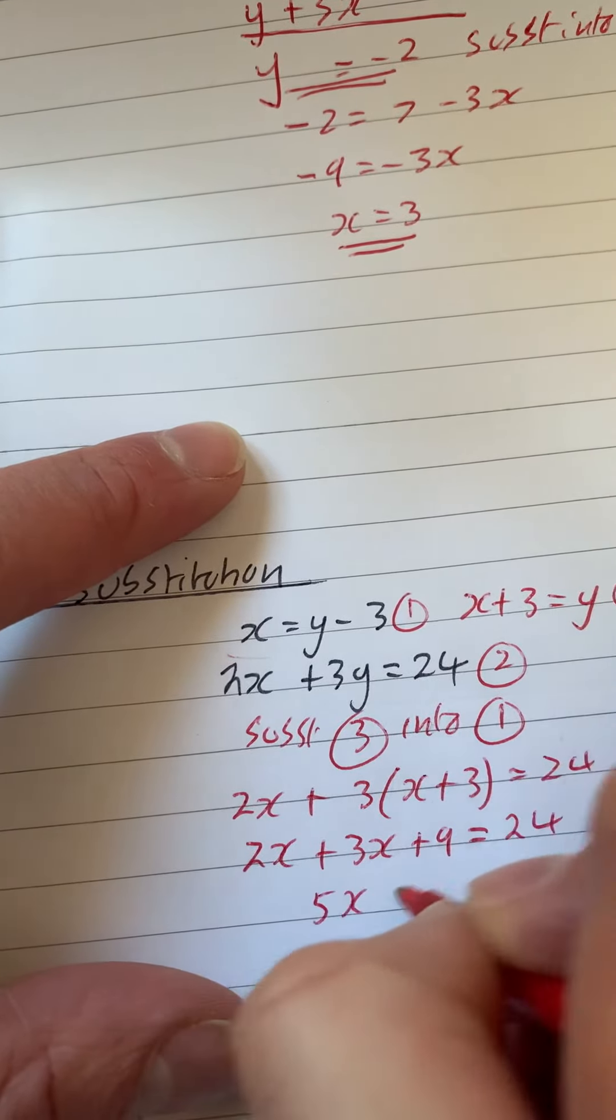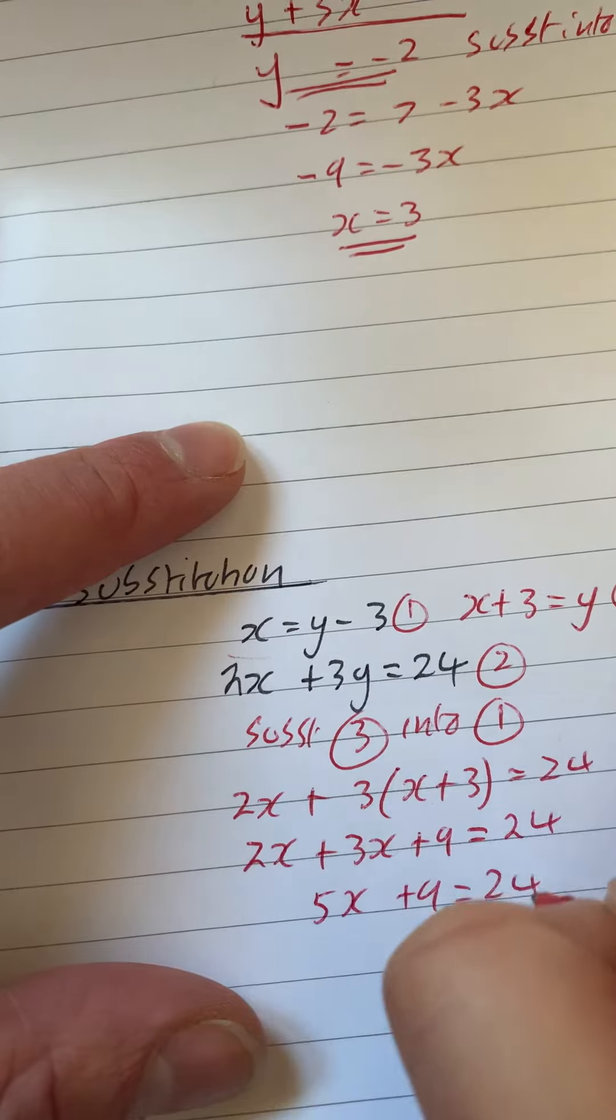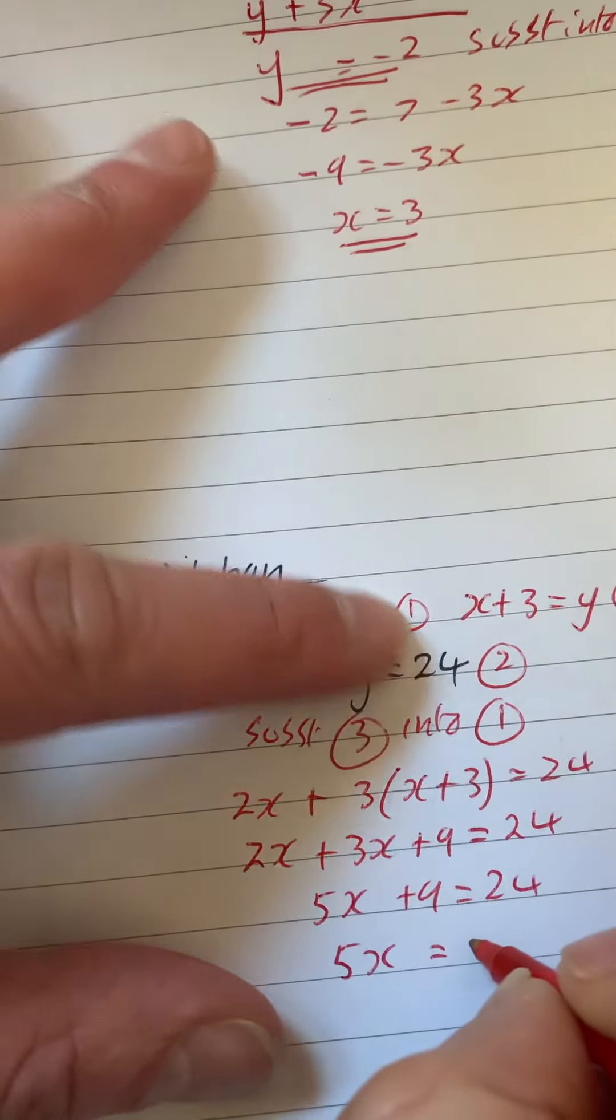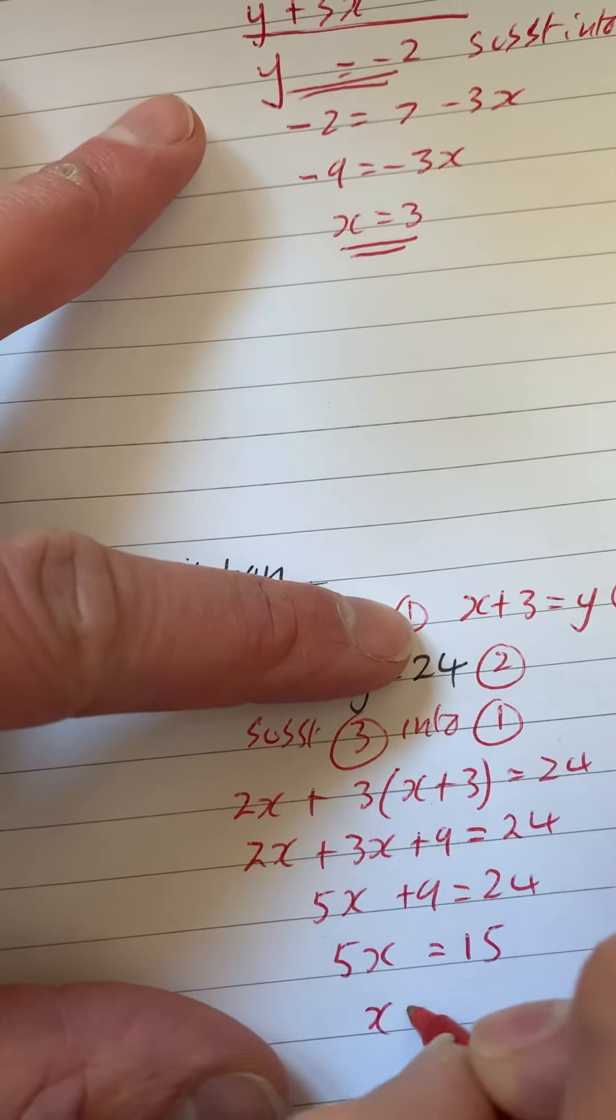2x add 3x is 5x. Take away the 9. When we take away the 9, we're going to get 15. So x is equal to 3.